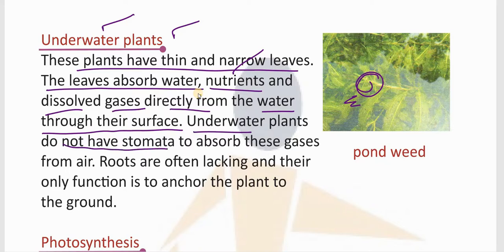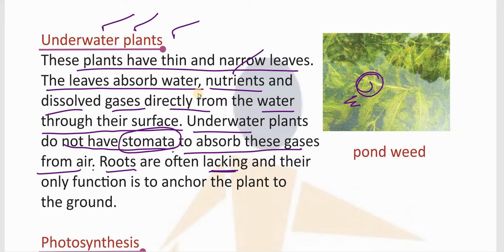Underwater plants do not have stomata — stomata are small vents or small holes present on the leaves which are used to exchange gases, similar to sweat pores on your skin. Since underwater plants have no stomata, there is no point of absorbing gases from air, and that's why they can survive easily under water. Roots are often lacking or very minimal, and their only function is to anchor — hold — the plant to the ground.